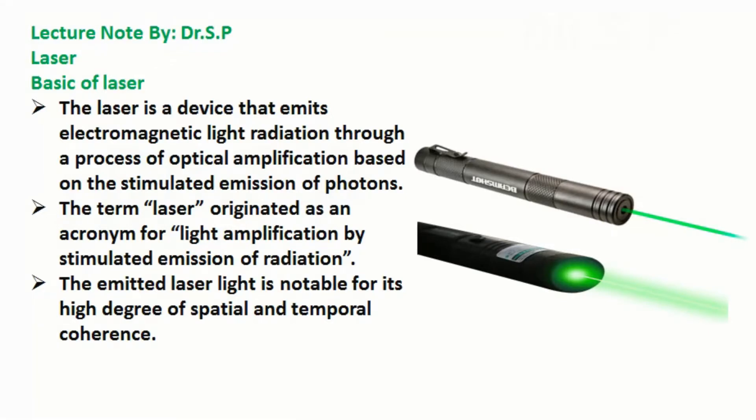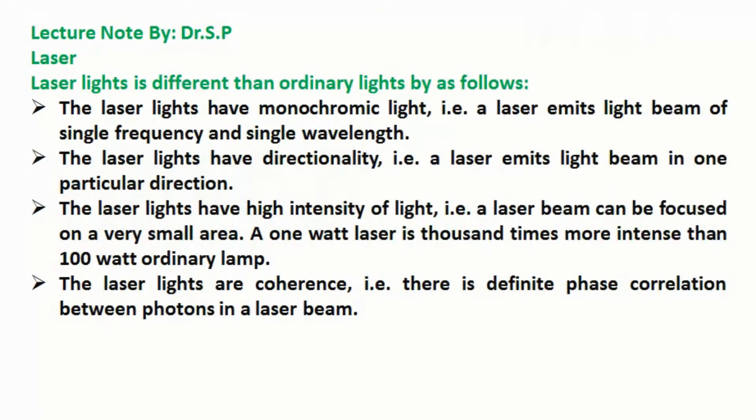The emitted laser light is notable for its high degree of spatial and temporal coherence. Laser lights are different than ordinary lights as follows: The laser lights have monochromatic light, that means a laser emits light beam of single frequency and single wavelength. The laser lights have directionality, that means a laser emits light beam in one particular direction.